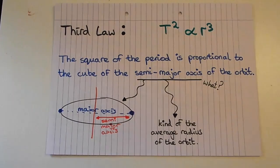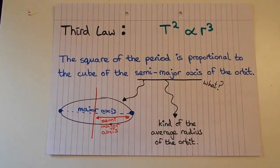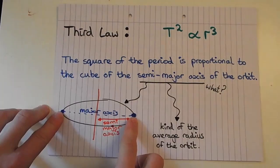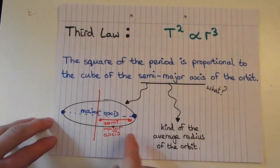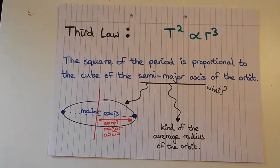His third law is that the square of the period is proportional to the cube of the semi-major axis of the orbit. The semi-major axis is essentially like the average radius of the orbit. An ellipse has two points furthest from each other — that's the major axis — and half that distance is the semi-major axis, which is a kind of mean radius representing the average distance from the planet to the Sun.